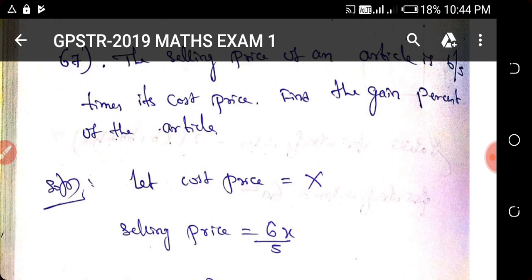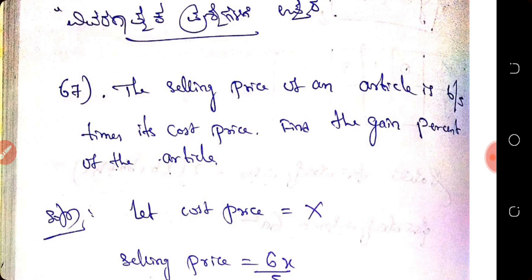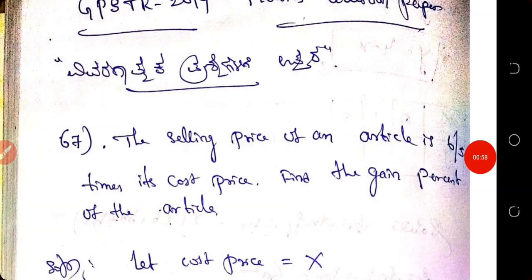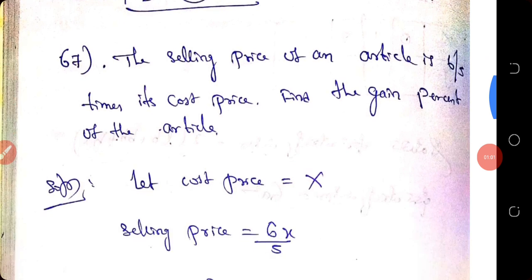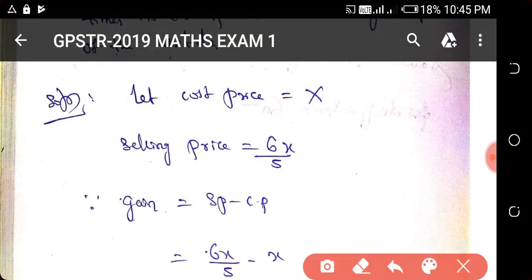The first question: the selling price of an article is 6/5 times its cost price. Find the gain percentage. Now let us take the cost price as x. Then the selling price is 6/5 times x, which equals 6x/5.